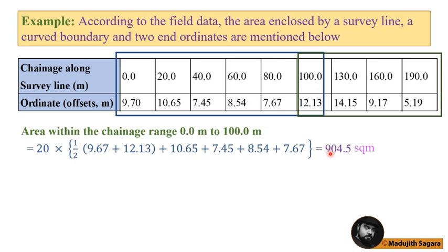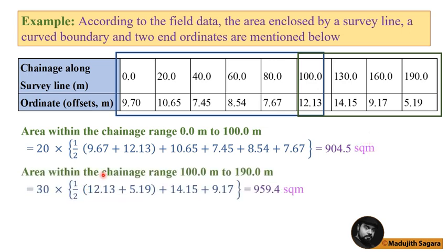Our final answer is 904.5. If our lengths are calculated in meters, we can make it as square meters. That is a very small thing. Then the area within chainage range 100 to 190, when our distance becomes 30, that is like this. You can see here W, this is the width. We have made this 30. Previously that was 20.